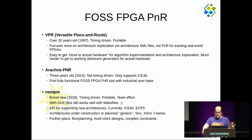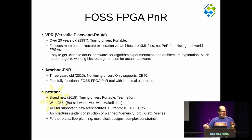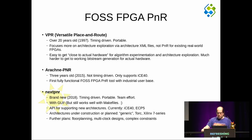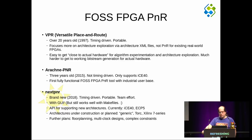We needed something else — not only to do architecture exploration on theoretical devices or experiment with new placement and routing algorithms, but for targeting real devices. So when we did Project IceStorm, we wrote our own place and route tool just for that, which was called Arachne PNR. By now it's about three years old.